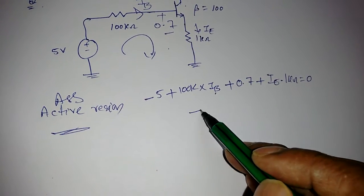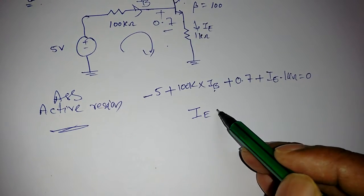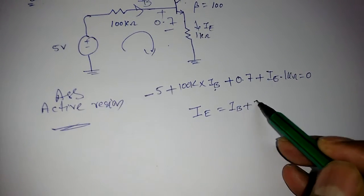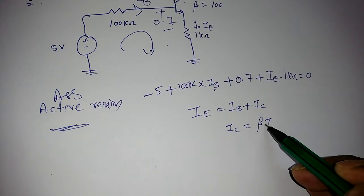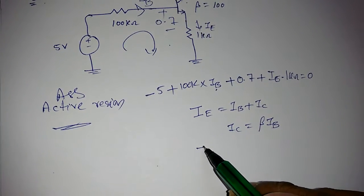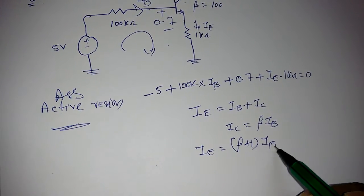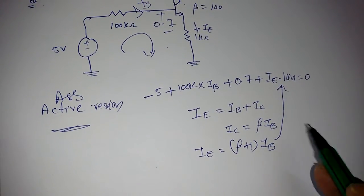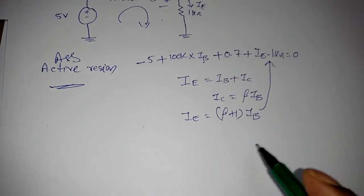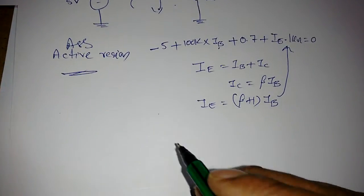We know IE = IB + IC. Again, IC = β × IB. If we substitute here, we get IE = (β + 1) × IB. Now I can replace IE by (β + 1) × IB and take IB common.